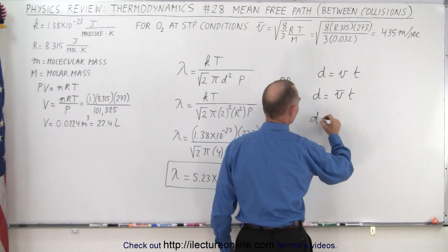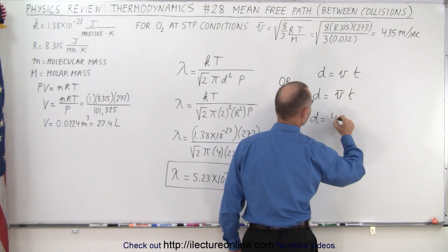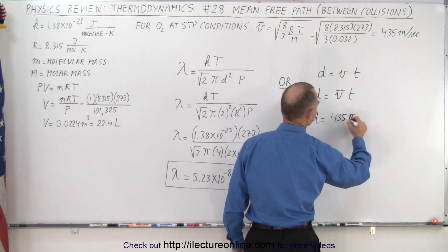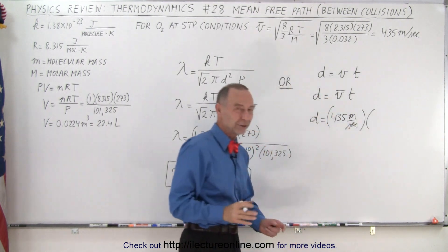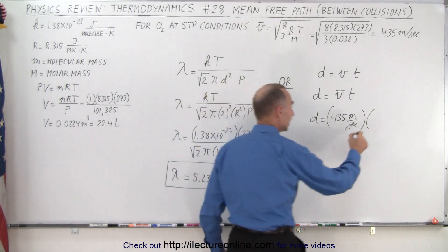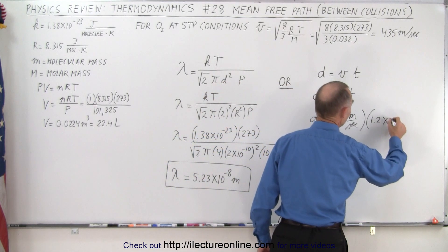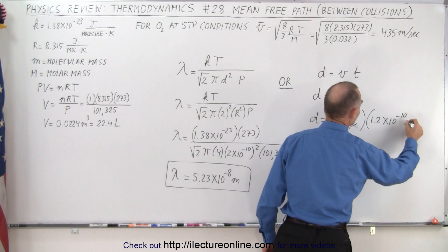And so the distance traveled equals the velocity, which we have over there, times the time between collisions. Now that we calculated in the previous video. That ended up being 1.2 times 10 to the minus 10 seconds.